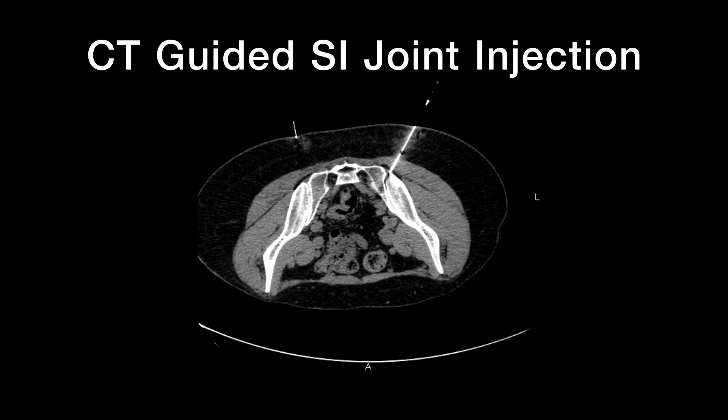Unfortunately, there's not a good imaging test for SI joint pain the way there is for the spine with MRI or CT scans. However, the best diagnostic test for the SI joint is to inject the joint under CAT scan guidance with numbing medication and some steroids, then test the numbing effect. If the numbing medication relieves the pain for the rest of the day, even while doing activities that normally make it hurt, then we know it is the right source of the pain.